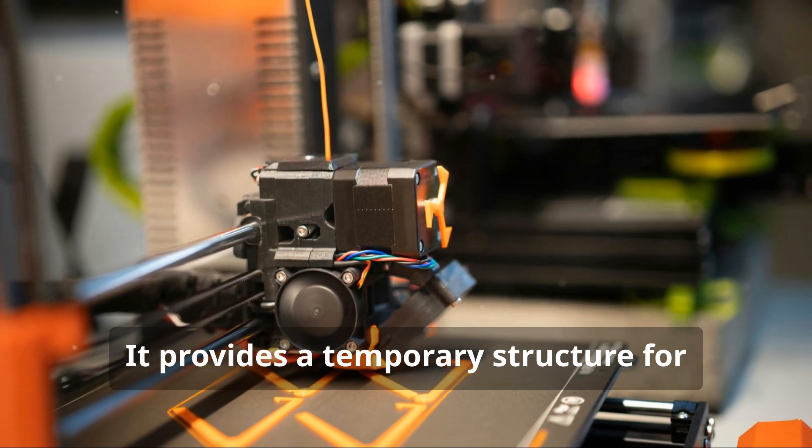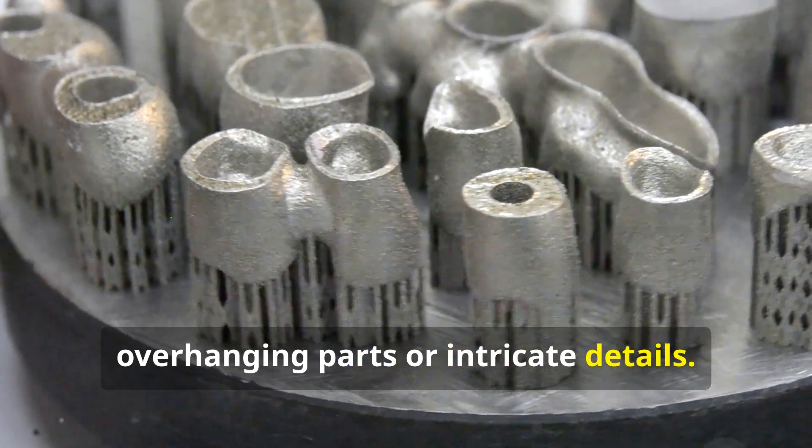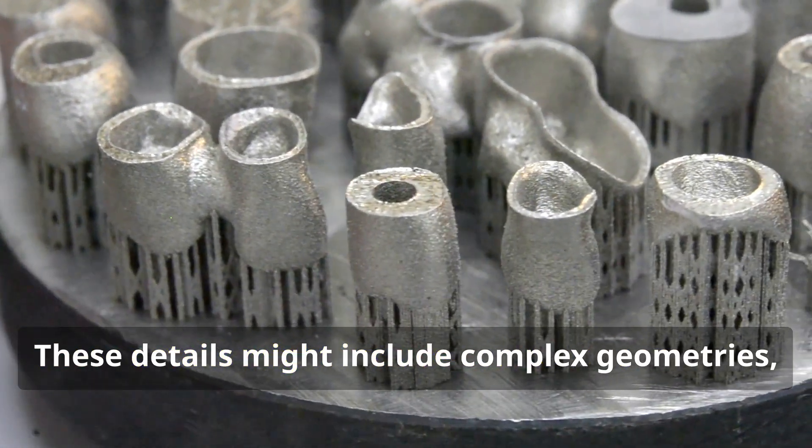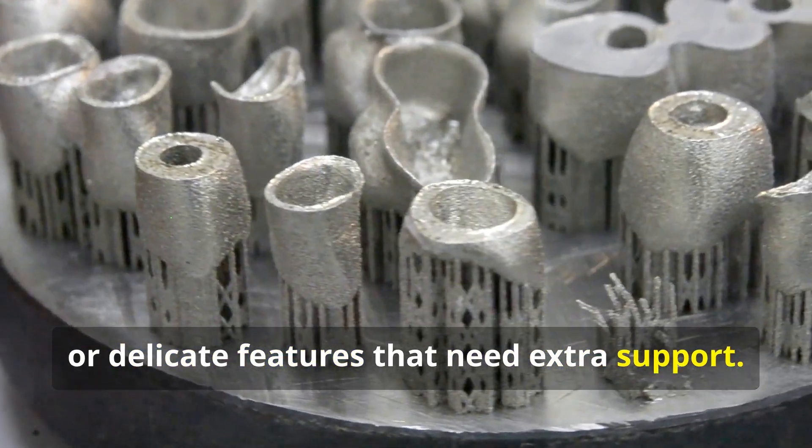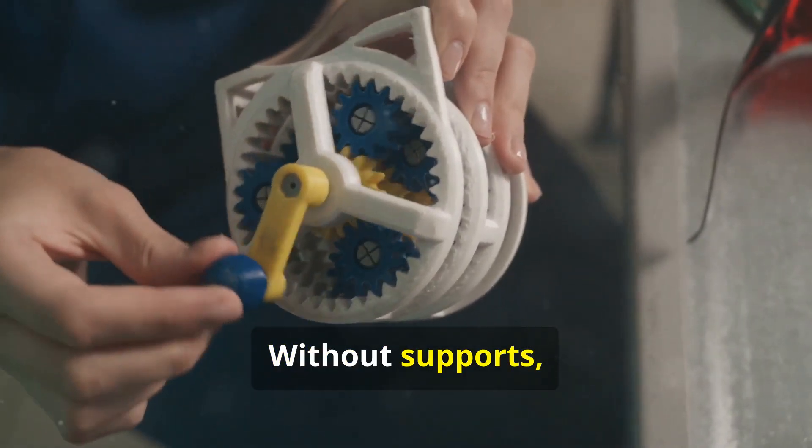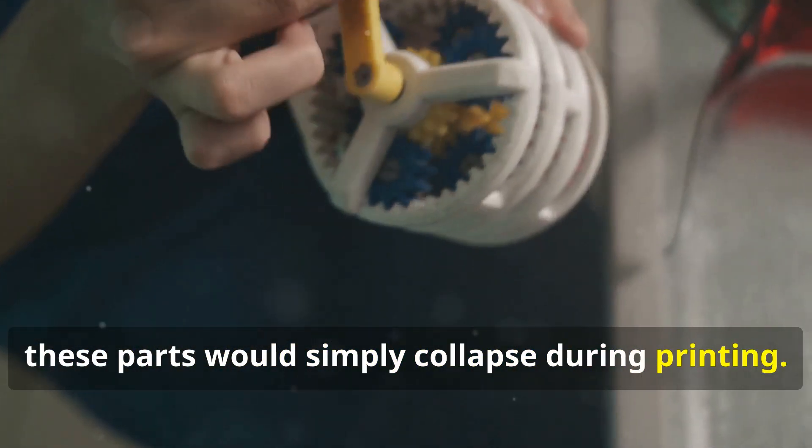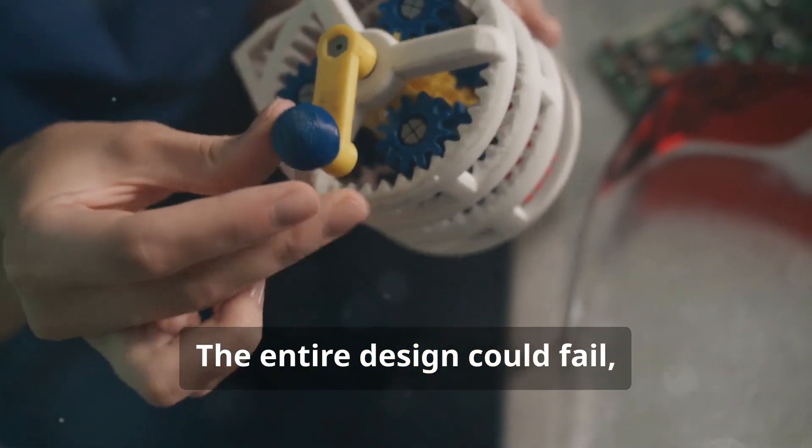It provides a temporary structure for overhanging parts or intricate details. These details might include complex geometries, overhangs, or delicate features that need extra support. Without supports, these parts would simply collapse during printing. The entire design could fail, leading to wasted material and time.